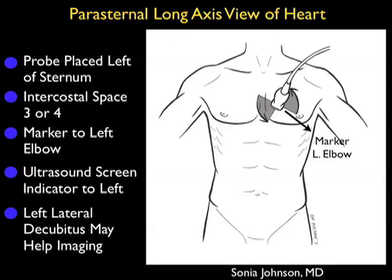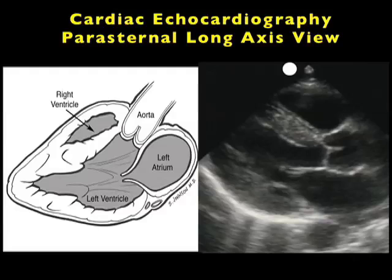Occasionally it can be somewhat difficult to get a good view of the heart from this plane, and moving the patient into the left lateral decubitus position can sometimes help imaging from the parasternal long axis plane. Now let's take a look at the images we'll obtain by performing the parasternal long axis view of the heart.